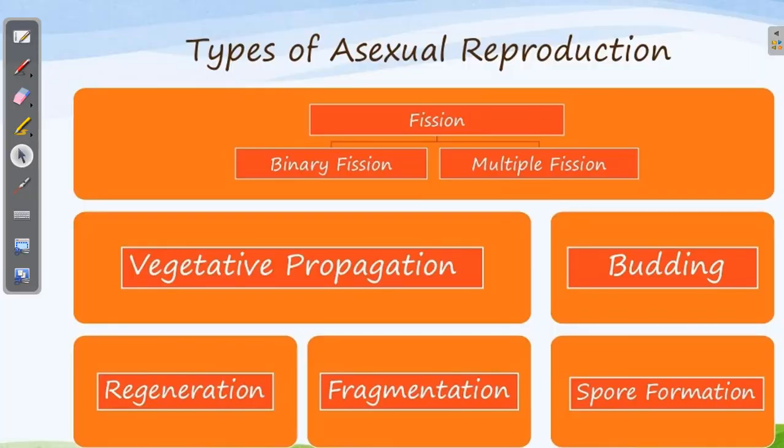Hello everyone. In this session we are going to discuss the types of asexual reproduction. We studied in the last section that asexual reproduction is when one single organism gives rise to two new individuals. How this process exactly takes place is what we are going to discuss in detail. There are different types: fission, vegetative propagation, regeneration, fragmentation, spore formation, and budding. Let's start with the first type — fission.